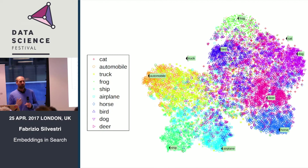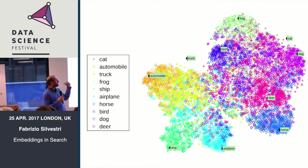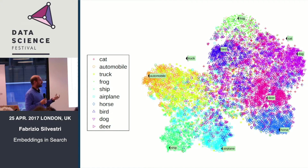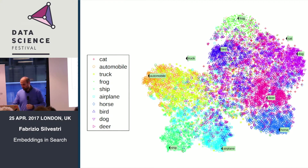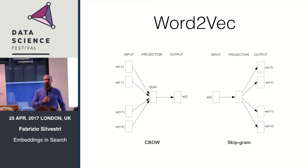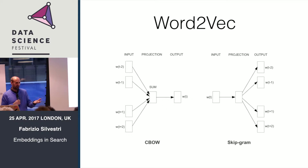Ideally, you would like a way of taking a word or object and mapping it into a semantic space, so that closer objects in this space are also semantically closer. Some years ago, a team from Google came up with Word2Vec, where the name stands for the fact that you are representing words with vectors.